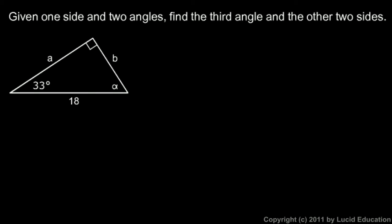In this problem we're given one side and two angles. The two angles are 33 and 90 degrees. We know the right angle is 90 degrees, and one side is obviously 18. We're told to find the third angle and the other two sides.